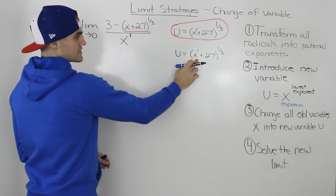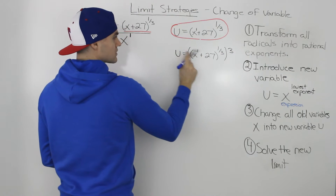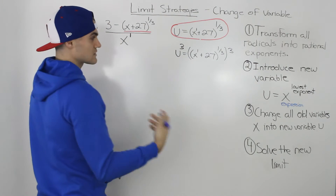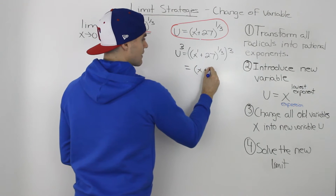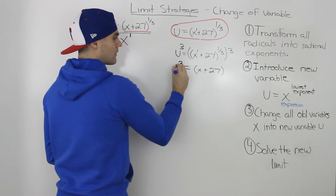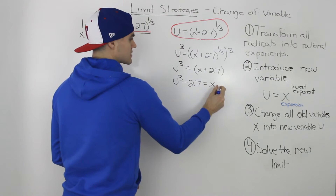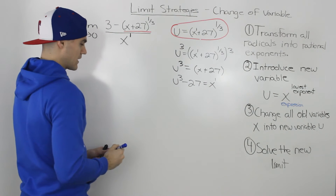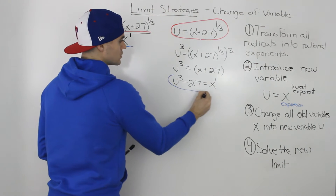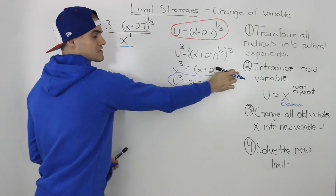To isolate for x, we need to get rid of the rational exponent 1/3, so we raise both sides to the power of 3. On the right side, (1/3) times 3 equals 1, leaving us with x plus 27. On the left side we have u cubed. Bringing the 27 over gives us u³ minus 27 equals x. So the denominator x to the power of 1 is equal to u³ minus 27.